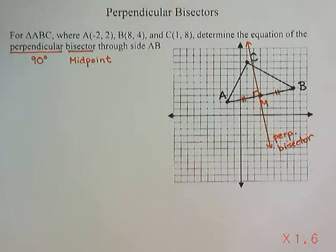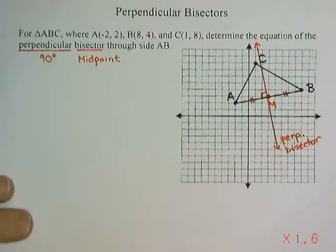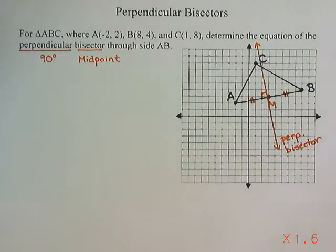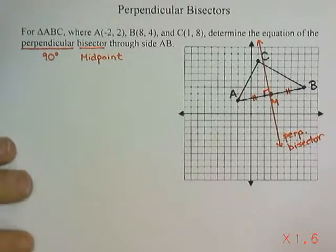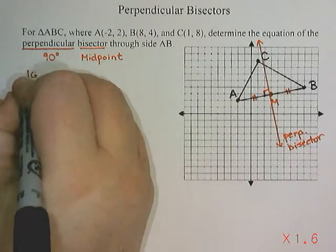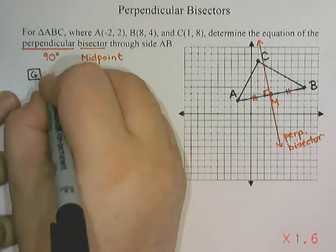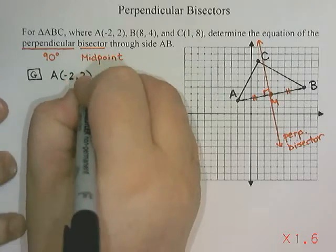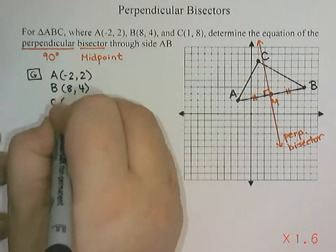What the question is asking is for me to find the equation of this line. So we're going to use the GRASP method: G for Given, R for Required, A for Analysis, S for Solution, and P for Present your answer in a sentence. Starting with G — what's given? In this question, it gave me three points: A is negative 2 and 2, B is 8 and 4, and C is 1 and 8.